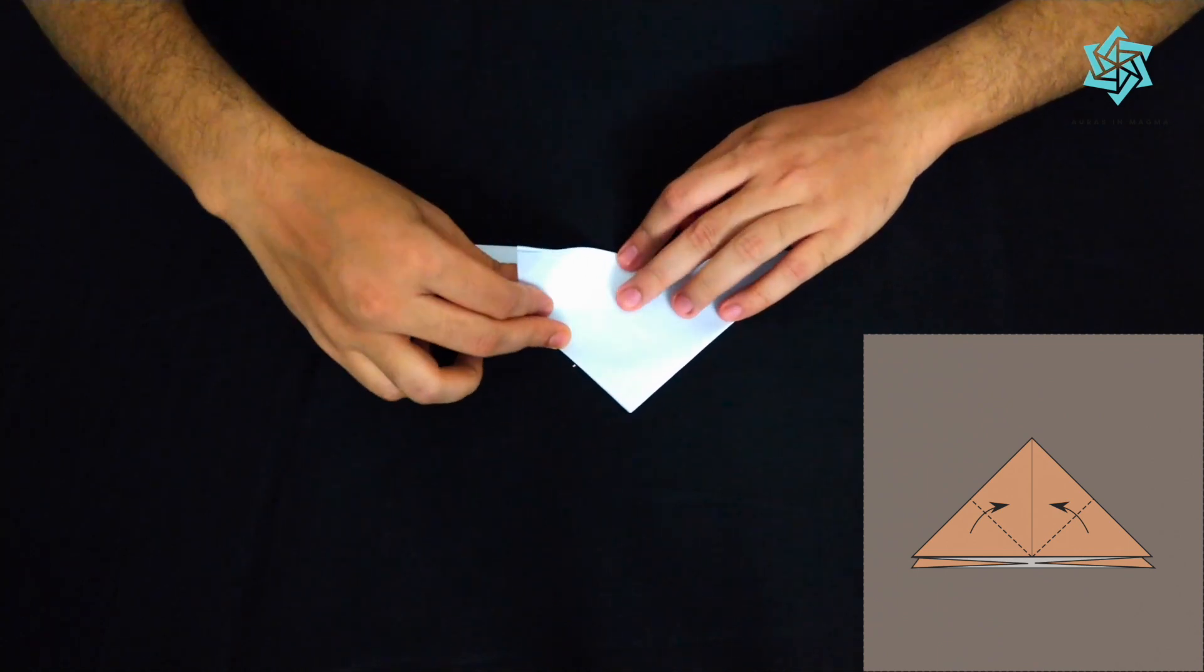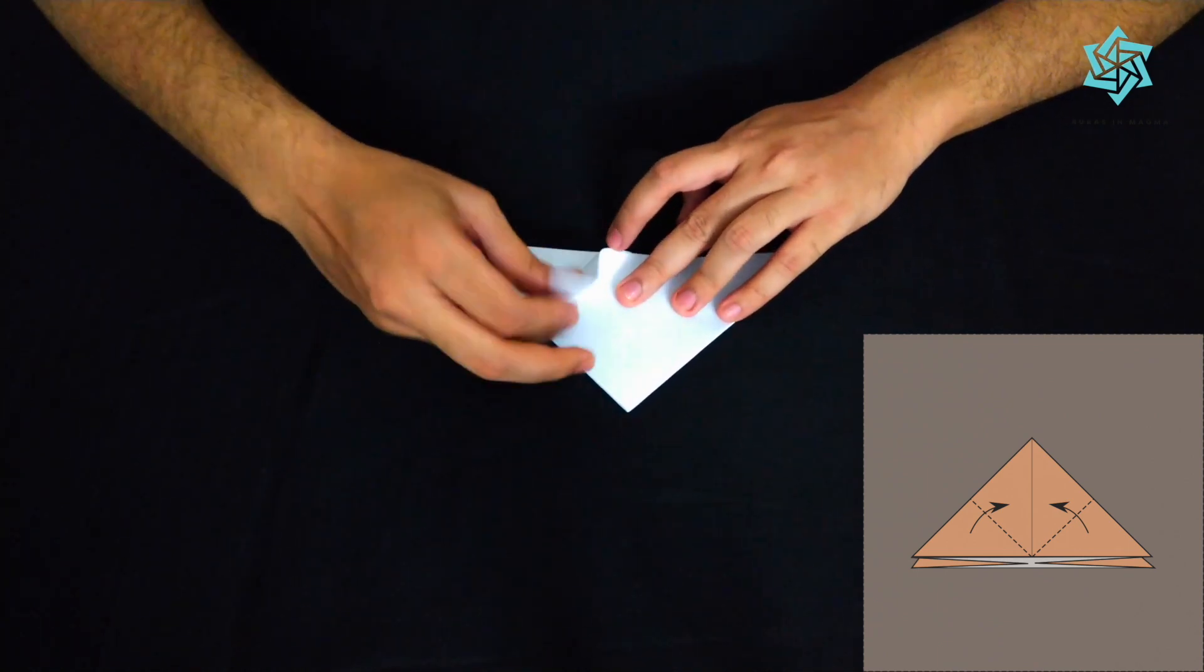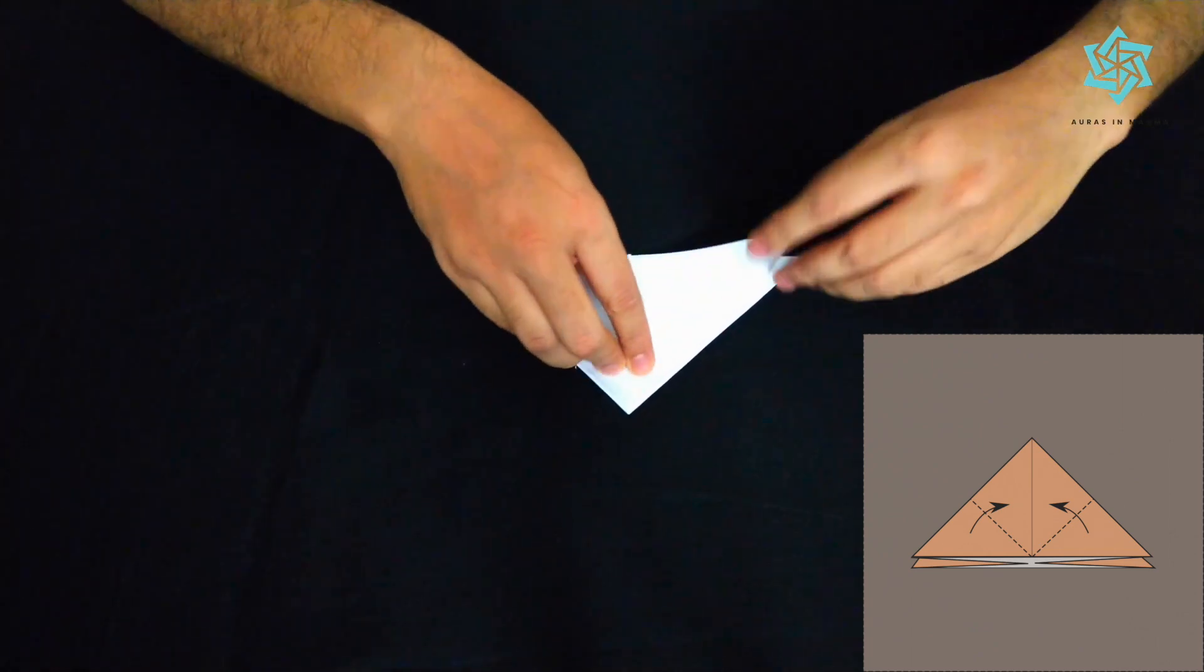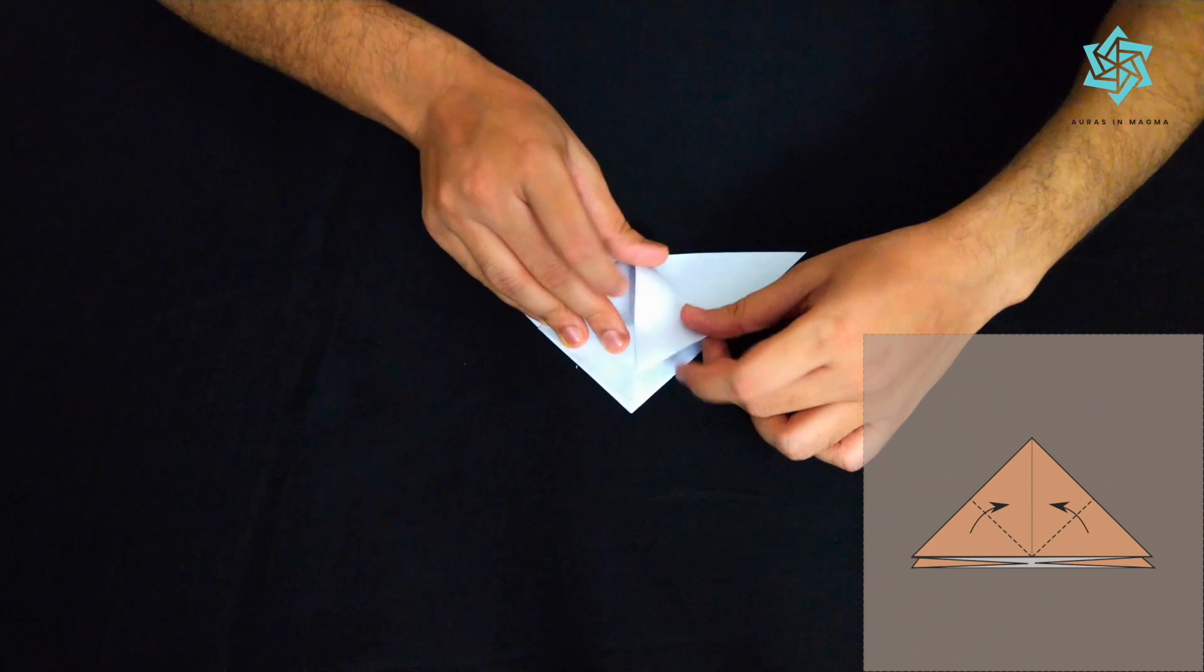We'll take for one of the sides, we'll take these corners and we'll put them on this vertex over here. The same thing over here with the one opposite.